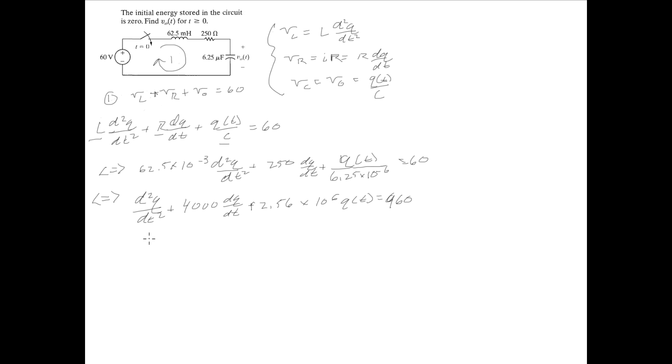The auxiliary equation for this second order would just be: we have a coefficient of 1 here, so let's just say r². We're just going to use r in our auxiliary, plus 4000.